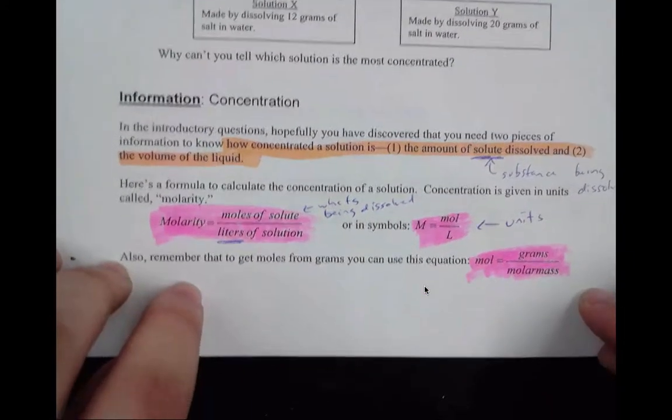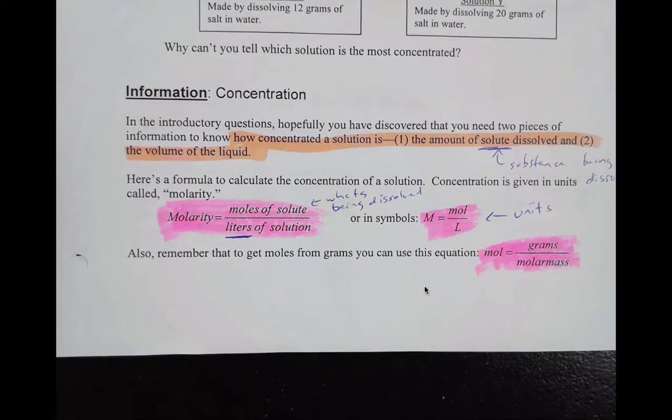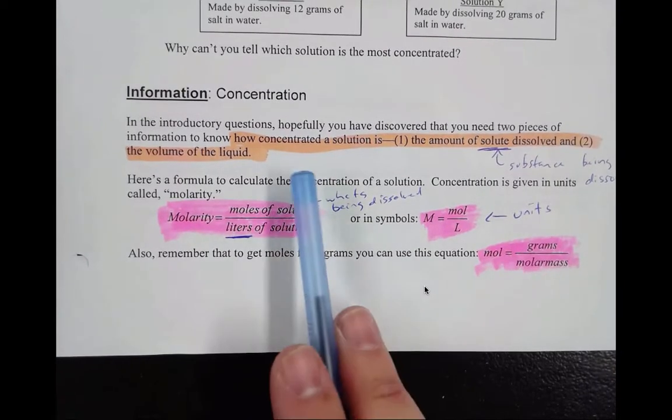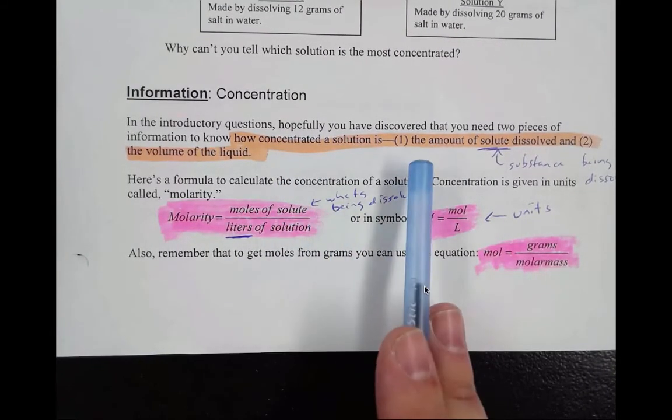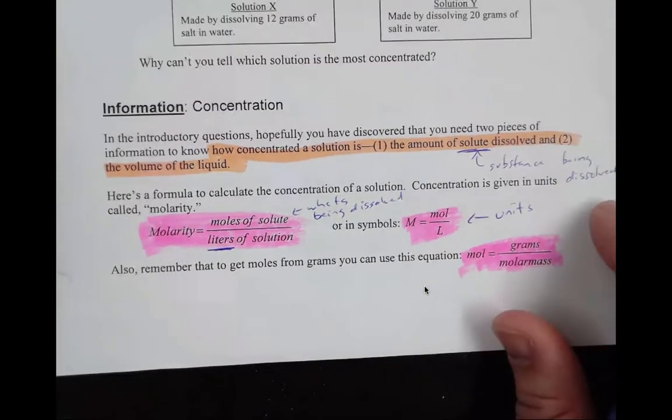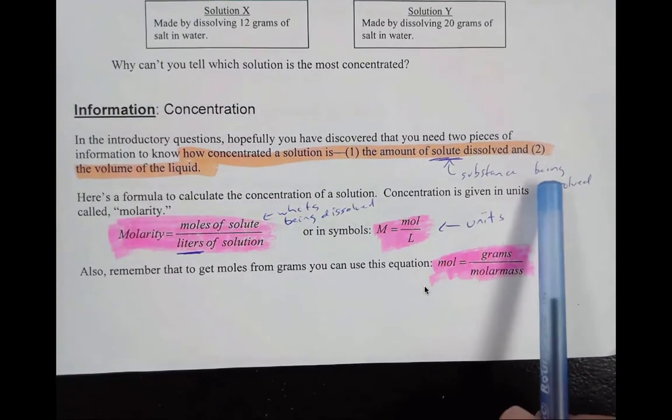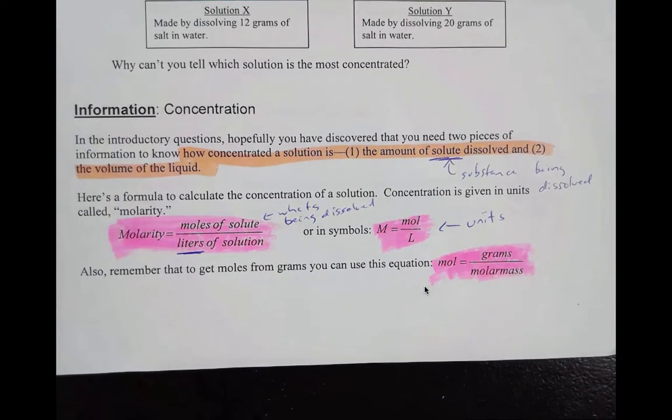Now, down here, we're coming to some information on concentration. So to determine concentration, we need to know a couple things: the amount of the solute dissolved—the solute is the substance that's being dissolved—and then we also need to know the volume of the liquid.